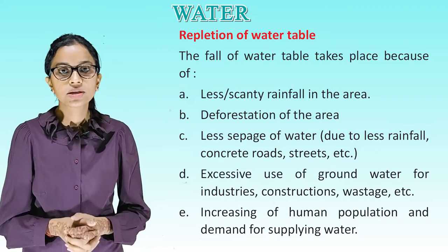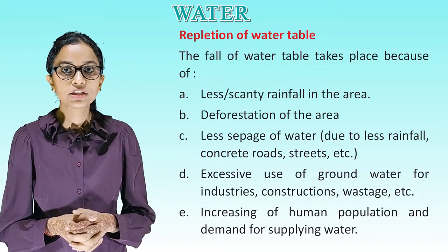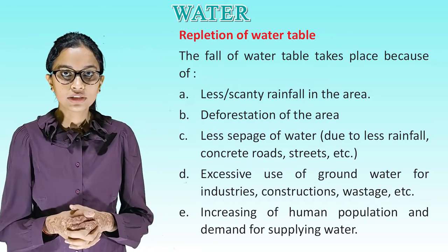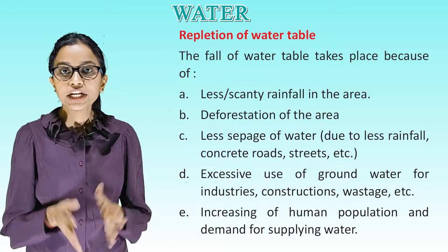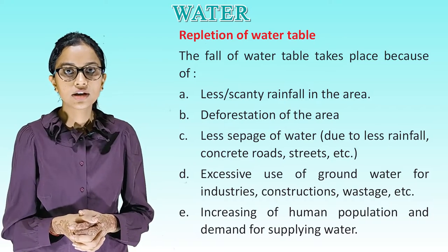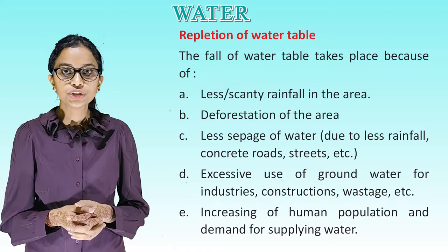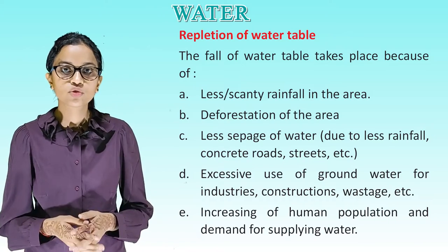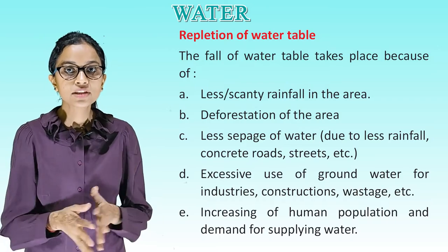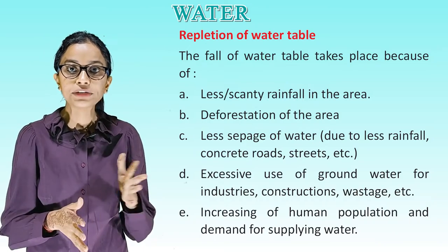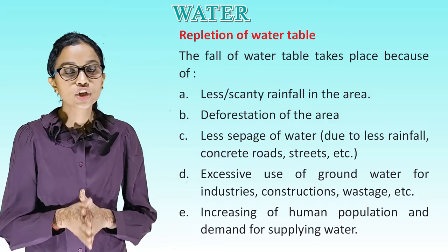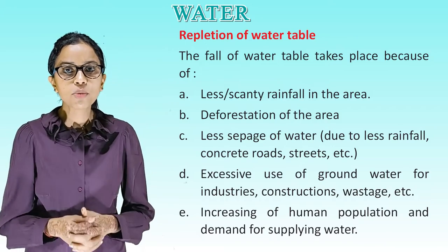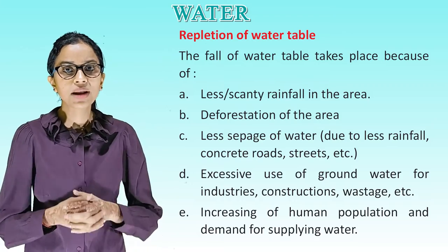Repletion of water table. The fall of water table takes place because of: a) scanty rainfall in the area, b) deforestation of the area, c) less seepage of water due to less rainfall and concrete roads and streets, d) excessive use of groundwater for industries, constructions and wastage, and e) increasing human population and demand for water supply.